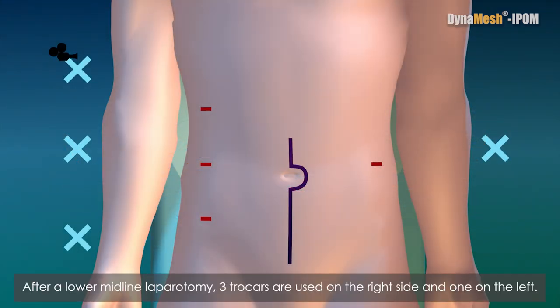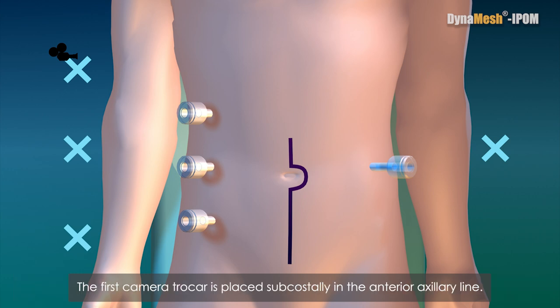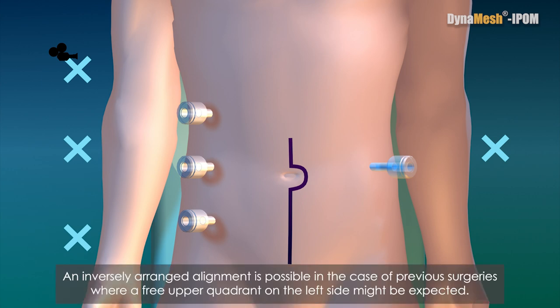After a lower midline laparotomy, three trocars are used on the right side and one on the left. The first camera trocar is placed subcostally in the anterior axillary line. An inversely arranged alignment is possible in the case of previous surgeries where a free upper quadrant on the left side might be expected.